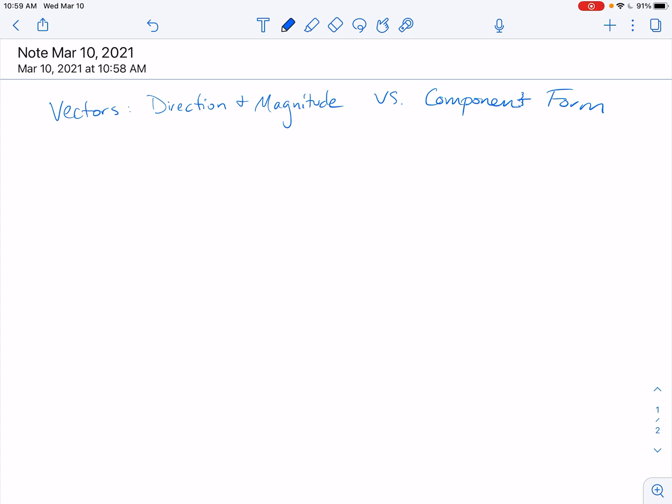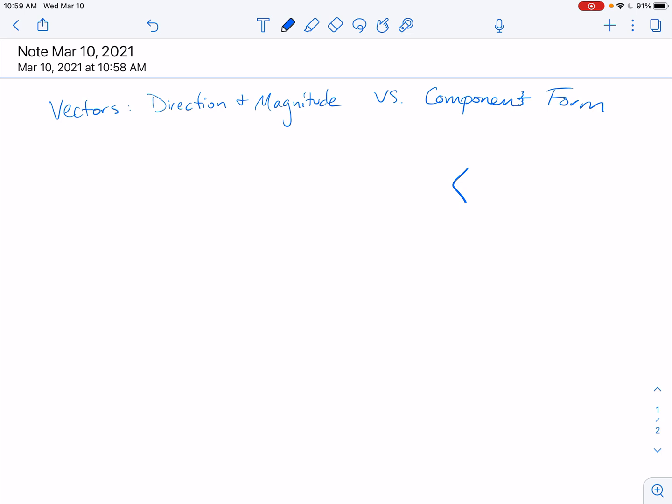One thing that can be a little bit confusing, and it pulls in things that we've talked about in the past, say we've got the component form, say it's negative 5, negative 12.